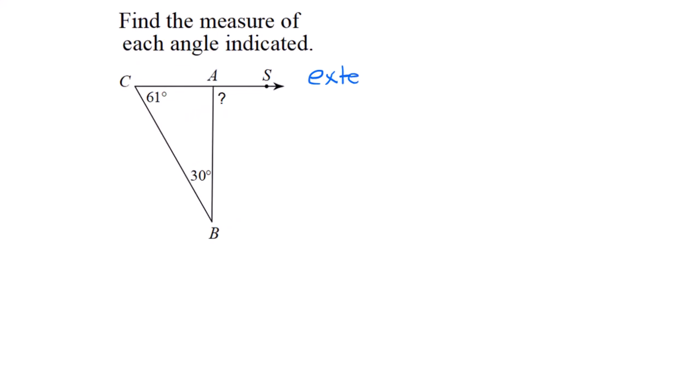This uses the exterior angle theorem, the fastest way to solve this. The theorem says the two angles farthest away add together to equal the outside angle. So 61 plus 30 equals 91. The correct answer is 91.